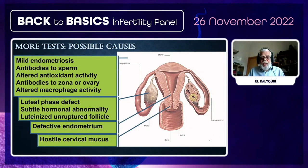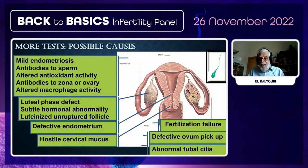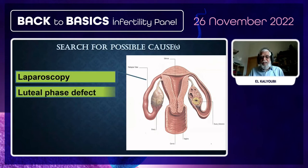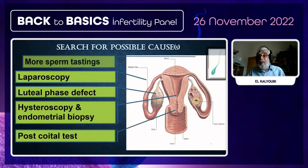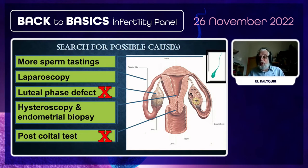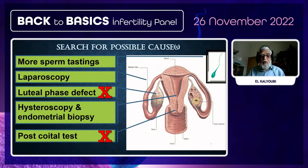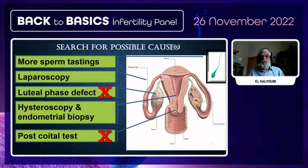If trying to find a cause, you can categorize contributing factors by cervical, uterine, tubal, ovarian, pelvic, or male factors. I would advise against post-coital tests, as they do not distinguish infertile from fertile patients and are not helpful in guiding treatment decisions for unexplained infertility.